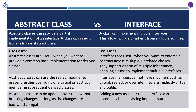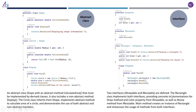Abstract classes can be updated over time without breaking changes, as long as the changes are backward compatible. In the case of interfaces, adding a new member to an interface can potentially break existing implementations.